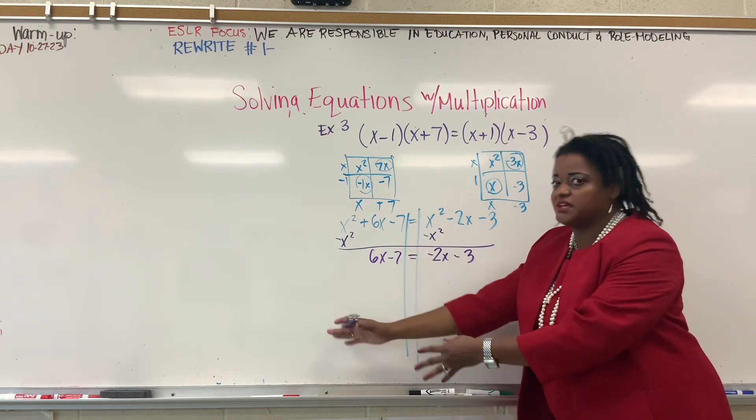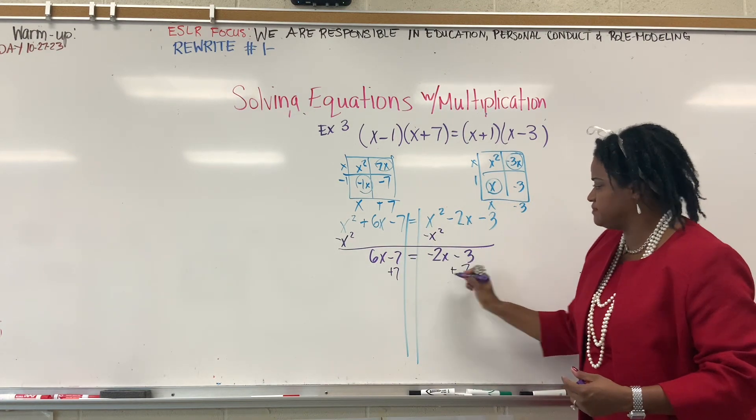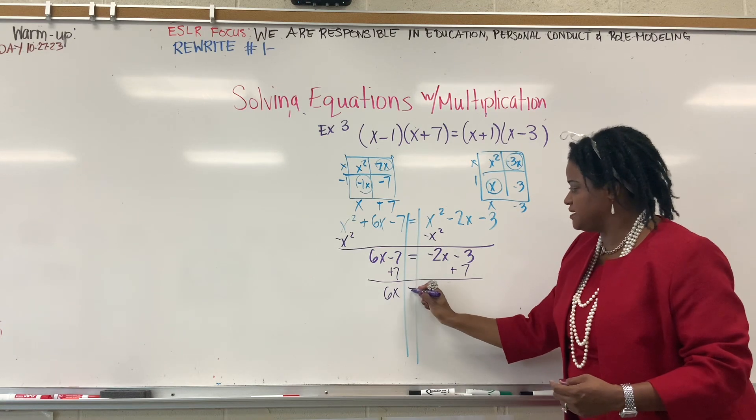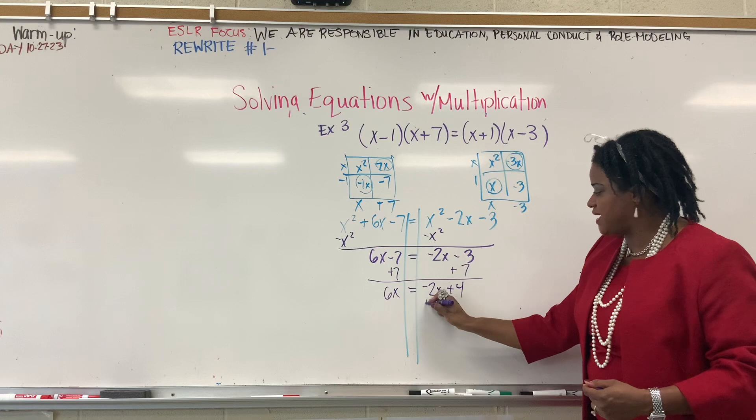And again, I want x on the left, numbers on the right. I'll add 7. 6x equals negative 2x plus 4. Almost done. Add 2x.